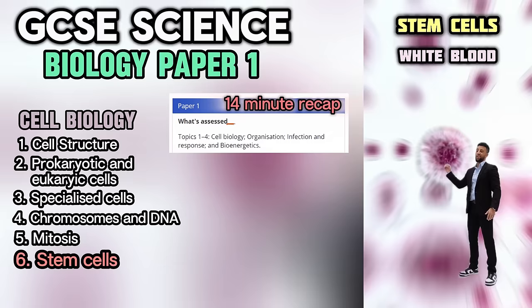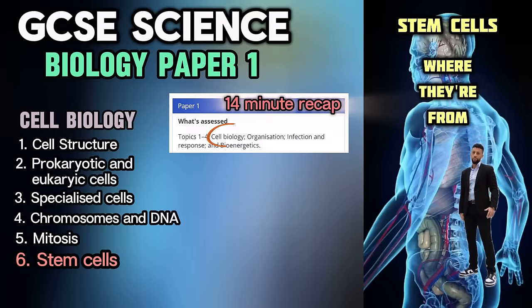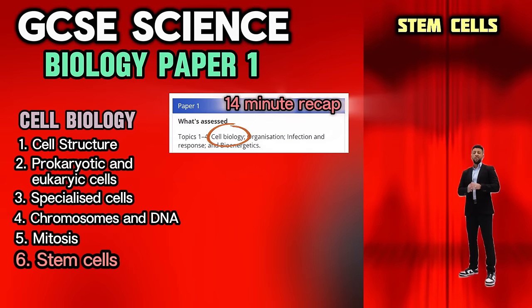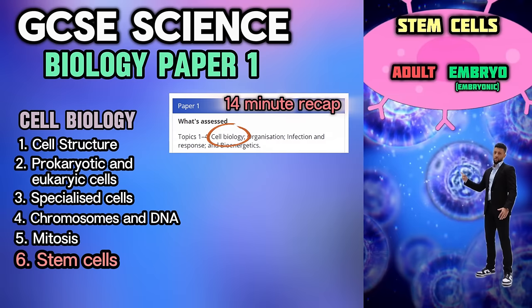There are many types of stem cells, and there are several places in the body where they're from — like the brain, blood, skin and even in the bone. We call these the stem cells — adult and embryo. An embryonic stem cell becomes anything.